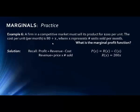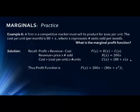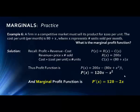The profit function is revenue minus cost: P(X) = 200X − (80X + X²) = 120X − X². Taking the derivative to find the marginal profit function, we get P′(X) = 120 − 2X. That is the answer we're looking for.